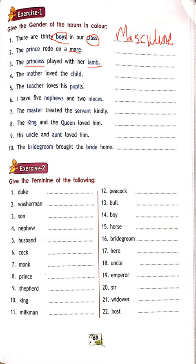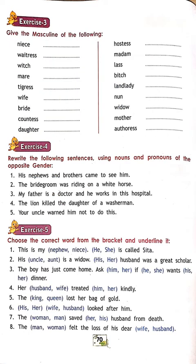The king and the queen loved him — king is masculine, queen is feminine. His uncle and aunt loved him — uncle is masculine, aunt is feminine. The bridegroom brought the bride home — bridegroom is masculine, bride is feminine. Exercise: give the feminine of the following — washerman: washerwoman. Son: daughter. Nephew: niece. Husband: wife. Cock: hen. Monk: nun. Prince: princess. Shepherd: shepherdess. King: queen. Milkman: milkwoman. Peacock: peahen. Bull: cow. Boy: girl. Mayor: mayoress. Bridegroom: bride. Hero: heroine. Uncle: aunt. Emperor: empress. Widower: widow. Host: hostess.